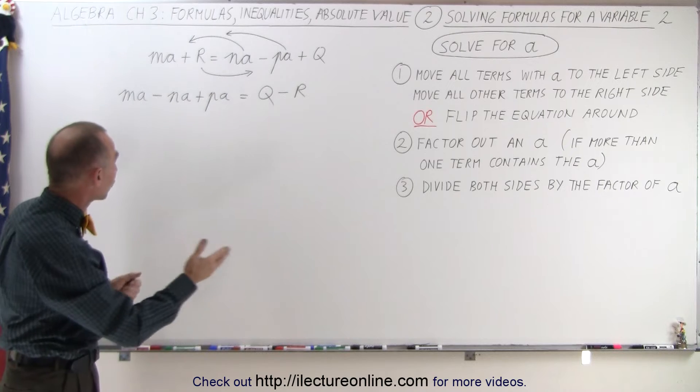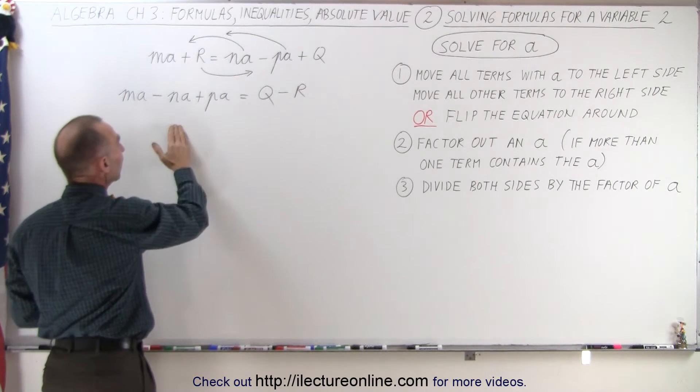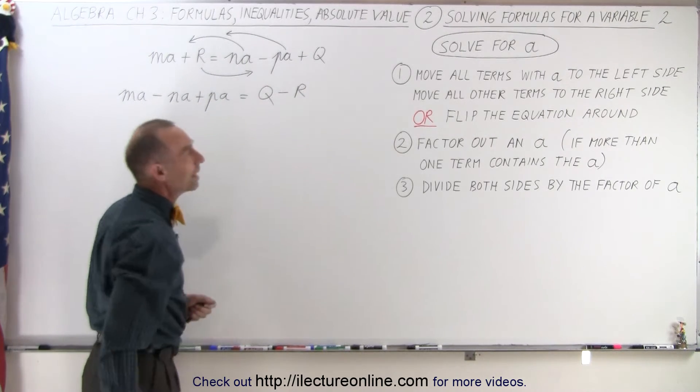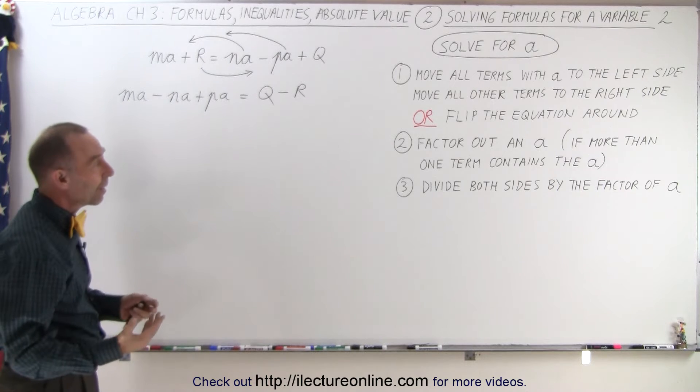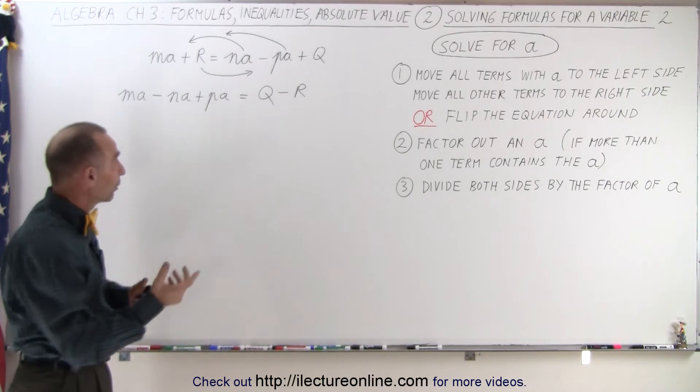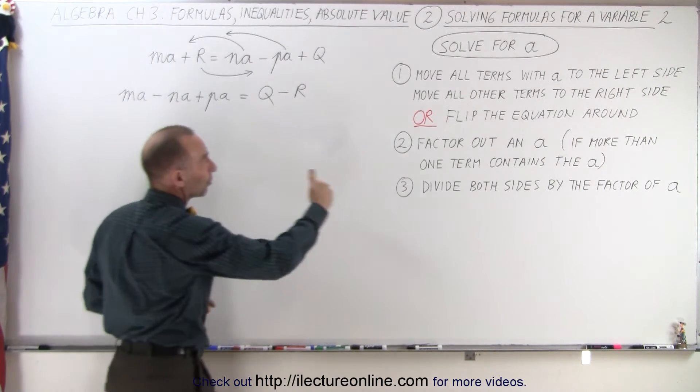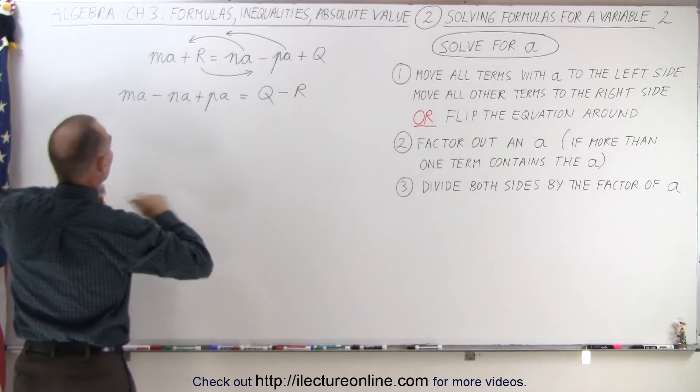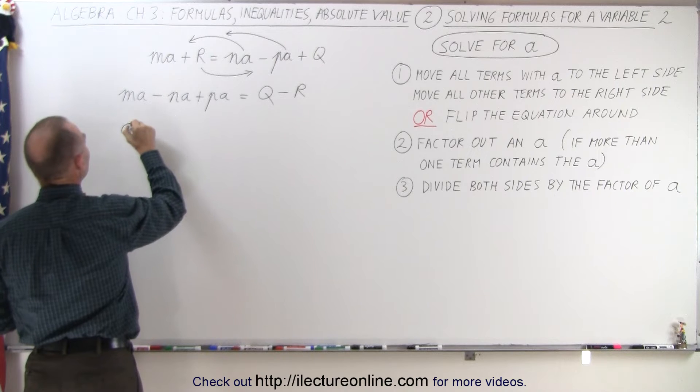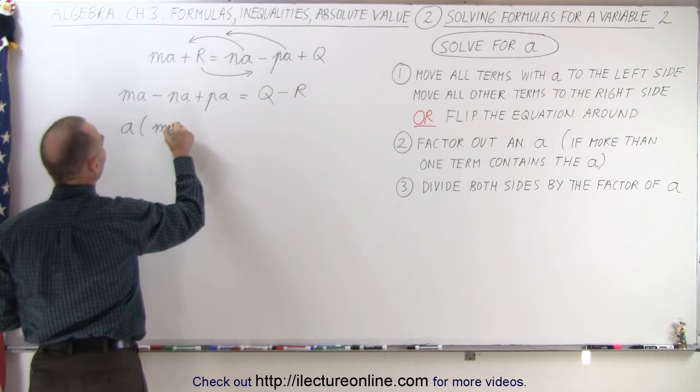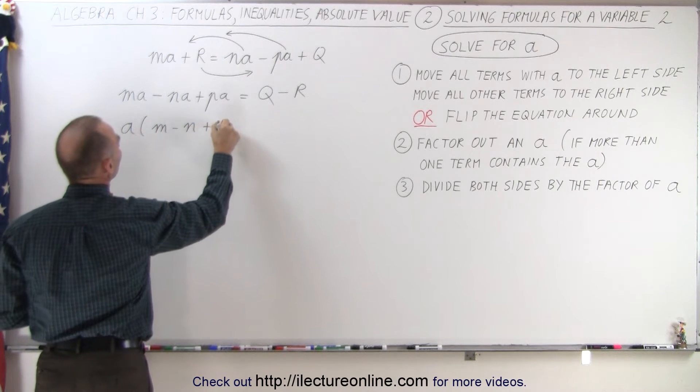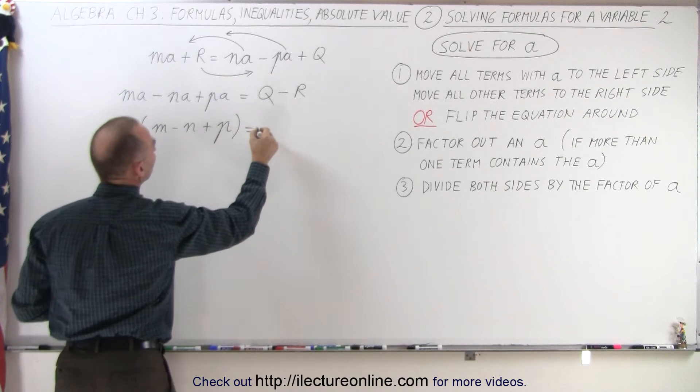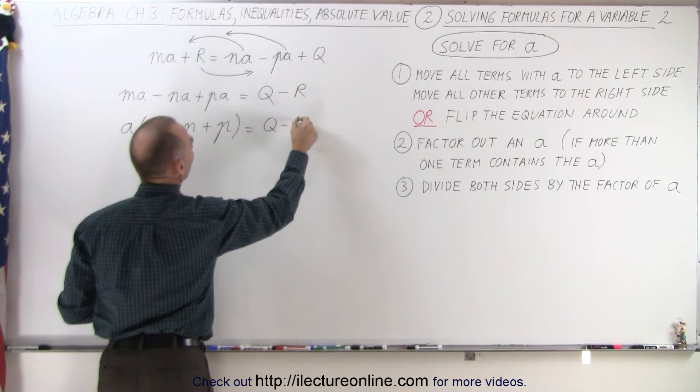So now we've managed to move all the terms that have an A to the left, and all the terms that do not have an A to the right. The next step, since we have more than one term that contains the A, we're supposed to factor out an A out of every term. So when we do that, we get the following: we get A times M minus N plus P is equal to Q minus R.